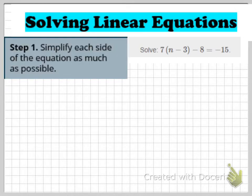Let's take a look at our first step. First, we want to simplify each side of the equation as much as possible. You want to look at the left side of the equal sign as its own expression and the right side as its own expression. You need to distribute if you see parentheses, and then combine like terms on either side if necessary.